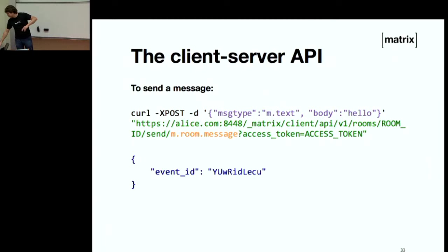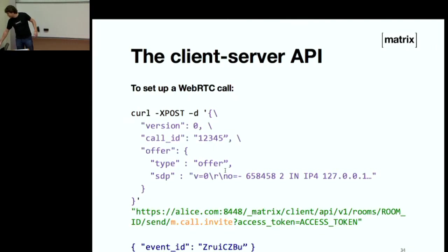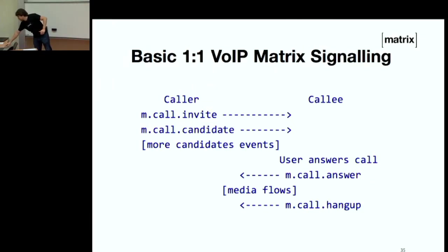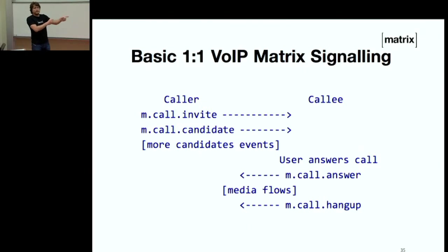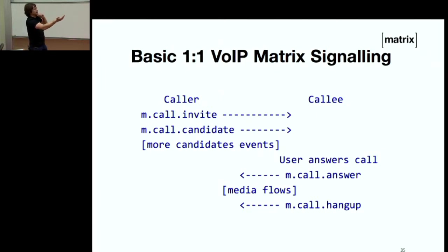Quickly, the API itself: if you want to post a message, you PUT some JSON to a URL and get back an ID. More interestingly, if you want to set up a WebRTC call, you likewise send some JSON to a URL. Setting up a WebRTC call is really like four messages: one to invite the person, another to send them the media candidates, they answer with an answer, and then a hang up. Relative to SIP, I think this is a good thing.